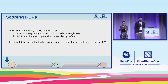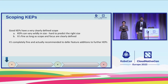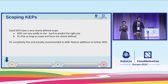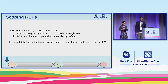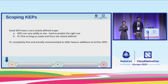Scoping of a KEP can often be very tricky. There's no one-size-fits-all — KEPs can be of different sizes. It's important to ensure that the scope of the KEP is well-defined, feasible, and it addresses a real-world problem. This is what helps increase the chances of the proposal getting accepted and adopted by the Kubernetes community.